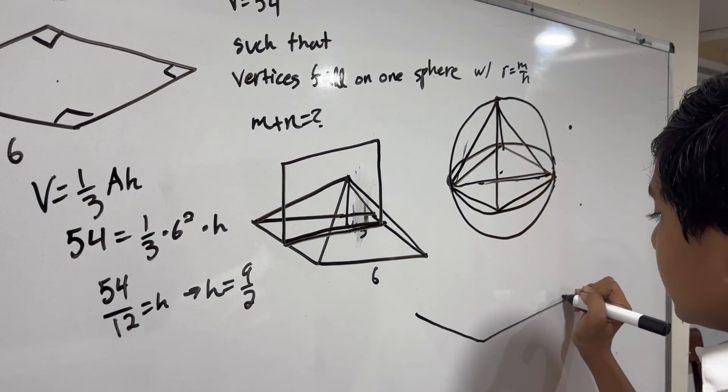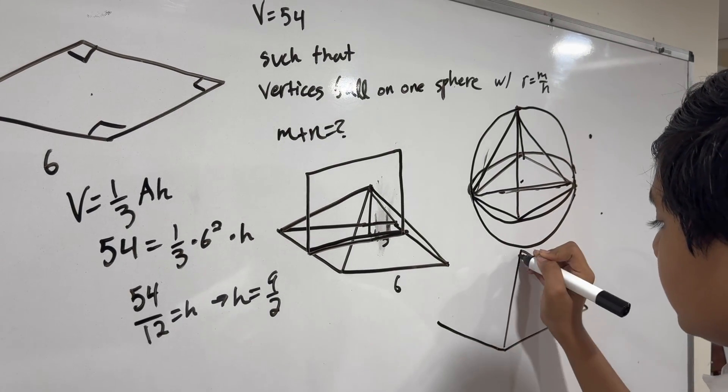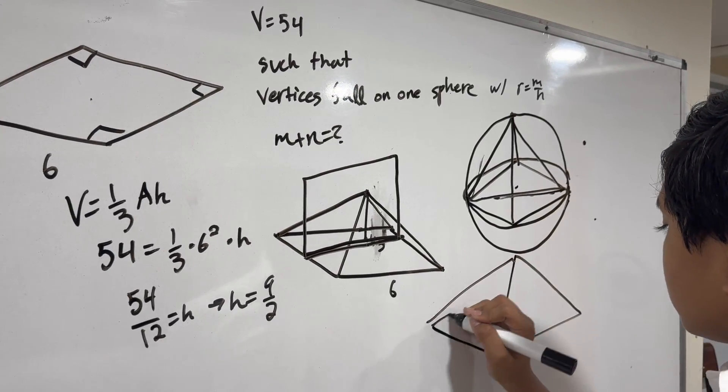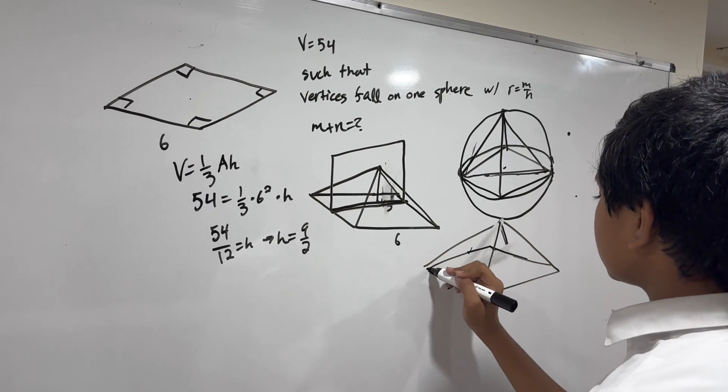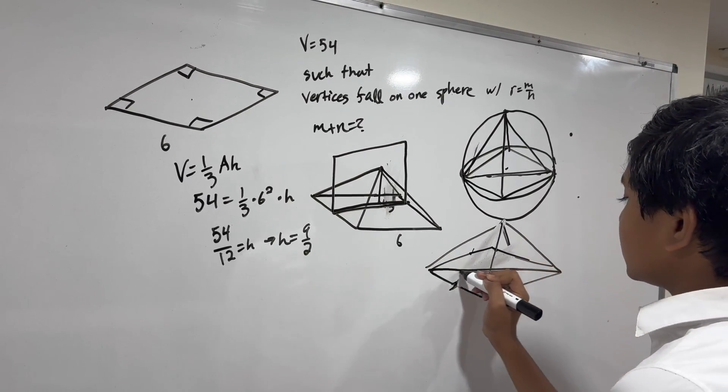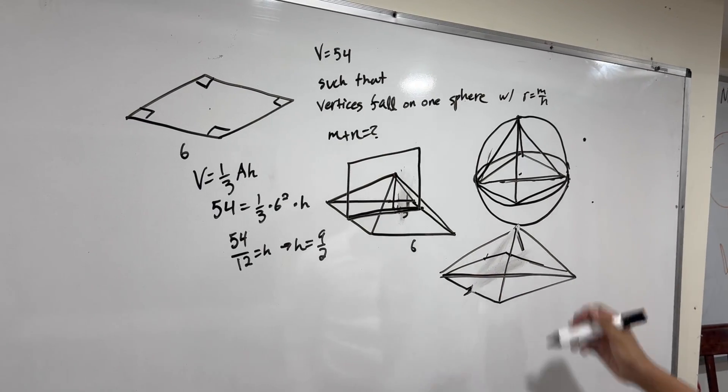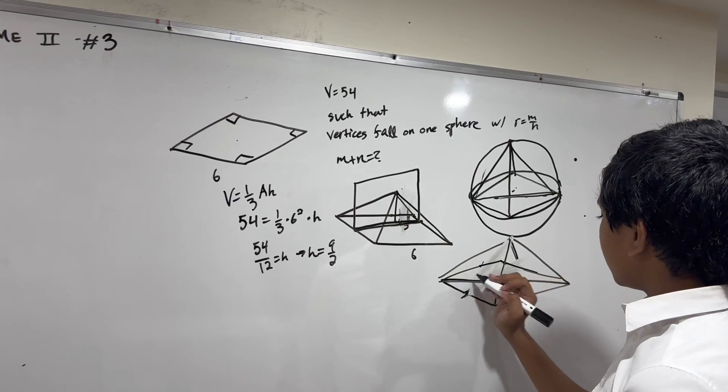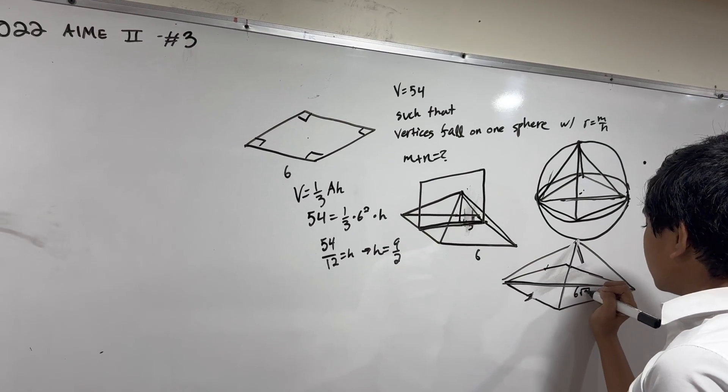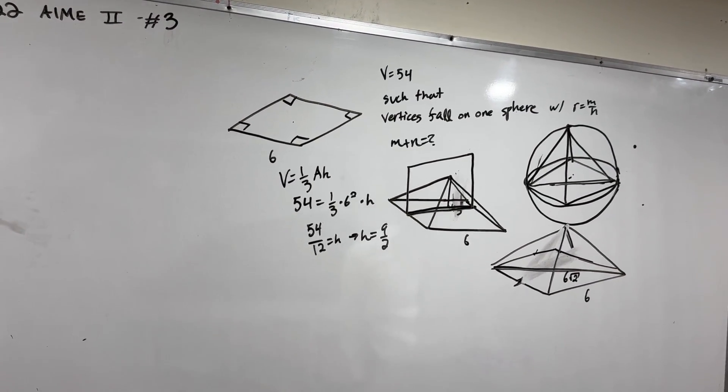So what is that going to look like? We can imagine what it looks like this way. For the cross section, we're going to use a cross section that goes through this line and the center of the sphere.